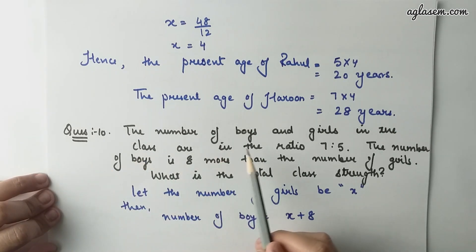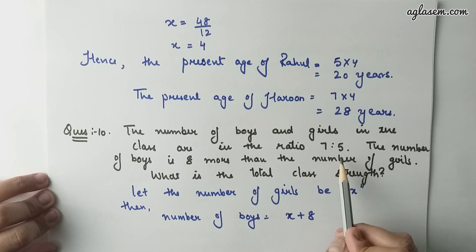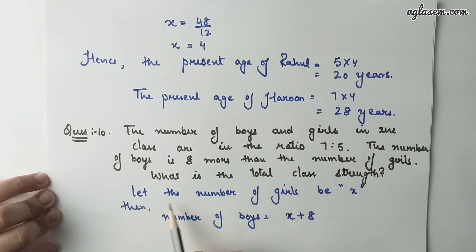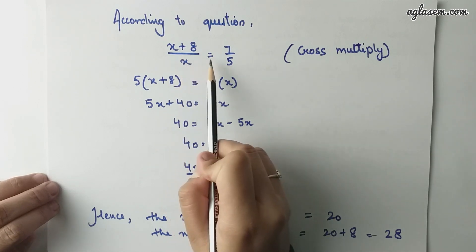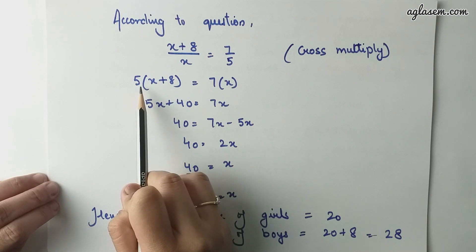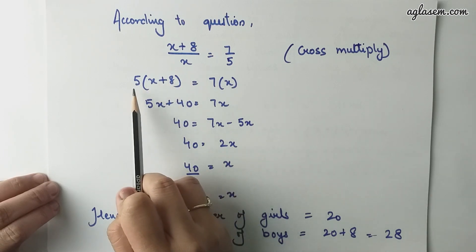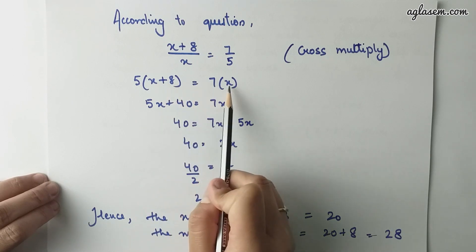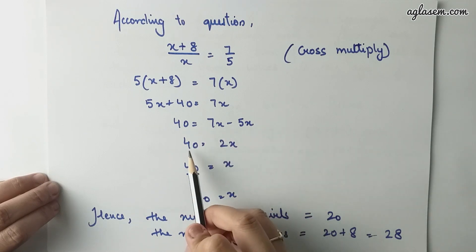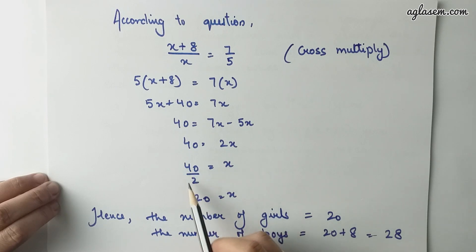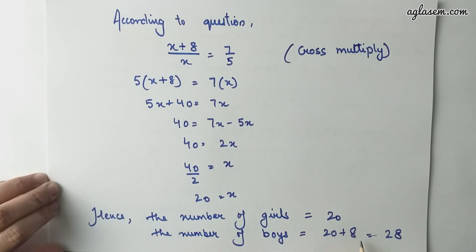Question number 10: The number of boys and girls in the class are in the ratio of 7 is to 5. The number of boys is 8 more than the number of girls. What is the total class strength? Let the number of girls be x; then the number of boys is x plus 8. According to the question, (x plus 8) upon x equals to 7 upon 5. Cross multiplying, 5 into (x plus 8) equals to 7x, giving 5x plus 40 equals to 7x, so 40 equals to 2x and x equals to 20. Hence, the number of girls is 20 and the number of boys is 28.